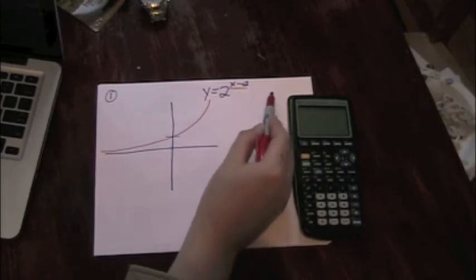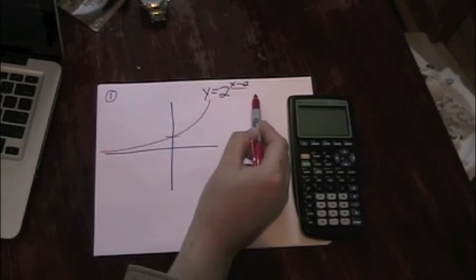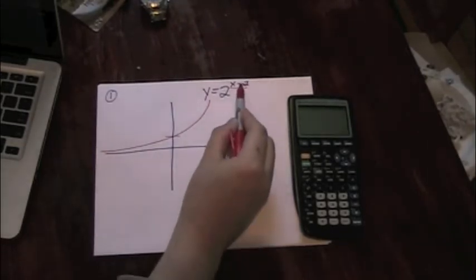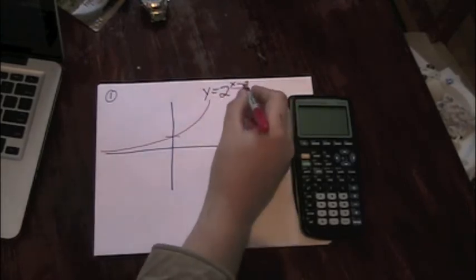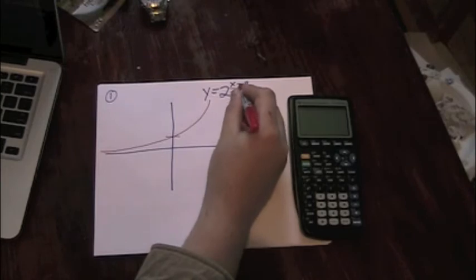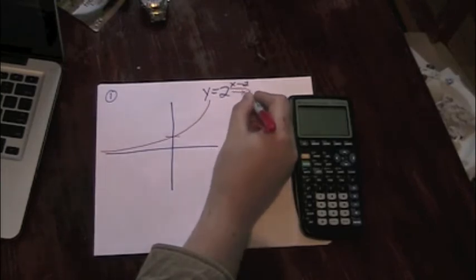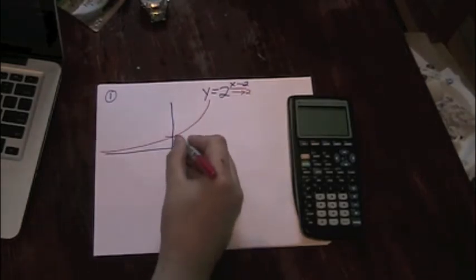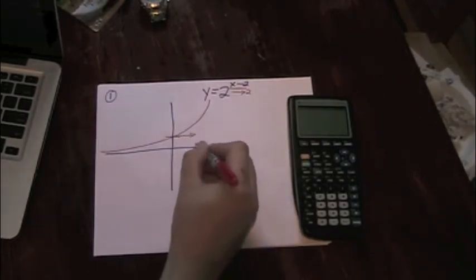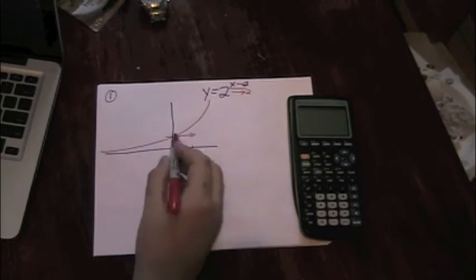Remember that if I had a minus 2 over here on the outside, that would imply that it would be translating this down 2. The minus 2 on the inside means that we're dealing with a horizontal translation in the opposite direction of the sign. So in this case, we're going 2 to the right. That means every point of this graph is going to be slid 2 units to the right.